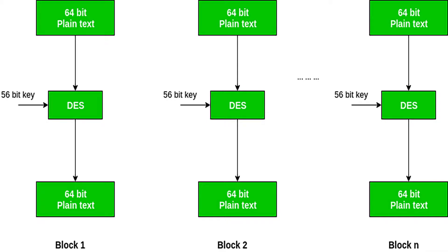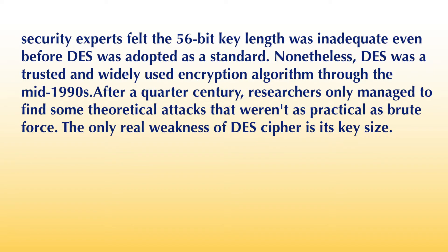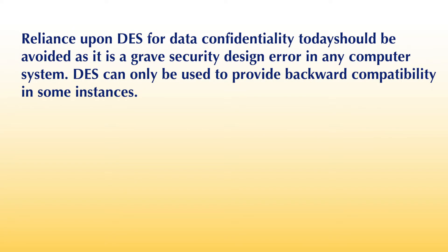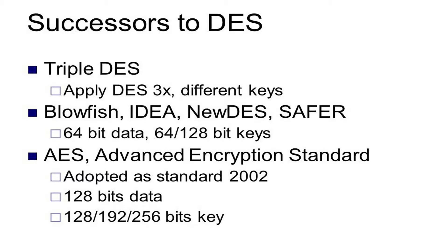Hence, it would take a maximum of 2^56 attempts to find the correct key. Even though some messages encrypted using DES are likely to be subjected to this kind of code-breaking effort, security experts felt the 56-bit key length was inadequate even before DES was adopted as a standard. Nonetheless, DES was a trusted and widely used encryption algorithm through the mid-1990s. After a quarter century, researchers only managed to find some theoretical attacks that were not as practical as brute force. The only real weakness of the DES cipher is its key size. Reliance upon DES for data confidentiality today should be avoided, as it is a grave security design error in any computer system. DES can only be used to provide backward compatibility in some instances.